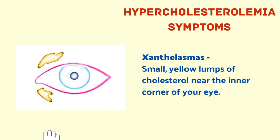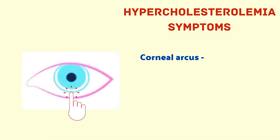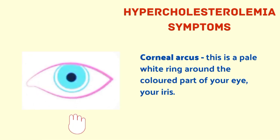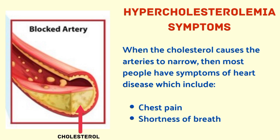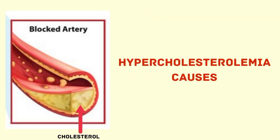Other visible signs include xanthelasma — small yellow lumps of cholesterol near the inner corner of your eye — and corneal arcus, a pale white ring around the colored part of your eye (the iris). When cholesterol causes the arteries to narrow, most people have symptoms of heart disease, including chest pain, shortness of breath, and fatigue.